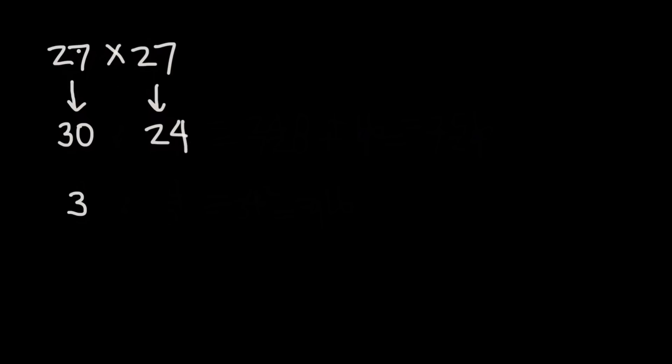So however much you move the first number up or down, you want to move the second number that same distance but in the opposite direction. So 27 went up by 3 to 30, which means 27 has to go down by 3 to 24.